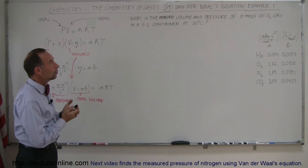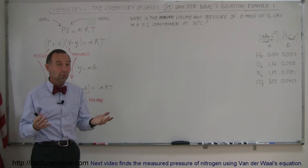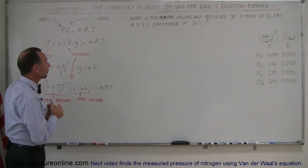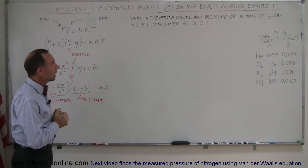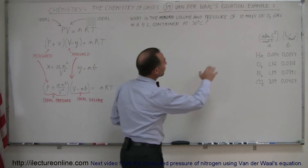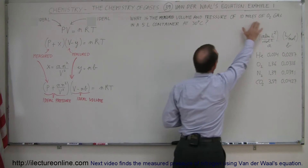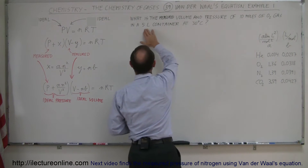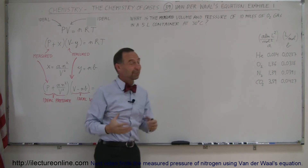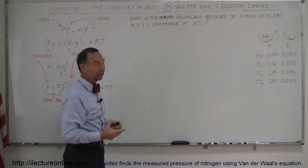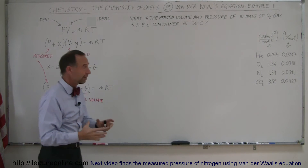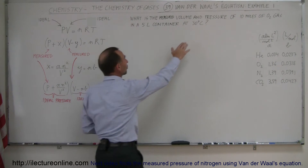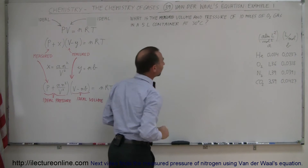Here we're going to do an example using the van der Waals equation. We have 10 moles of oxygen gas stuffed into a 5-liter container — stuffed because putting 10 moles into 5 liters is going to be very, very dense. The temperature is 30 degrees centigrade.